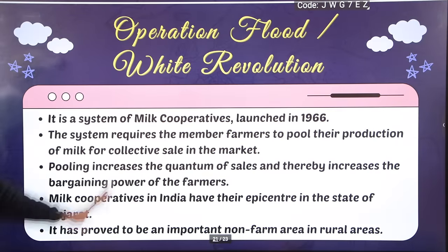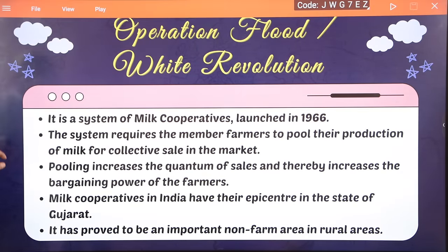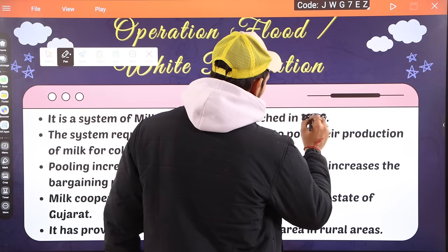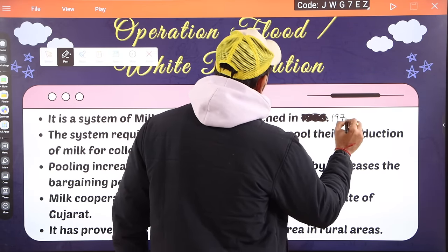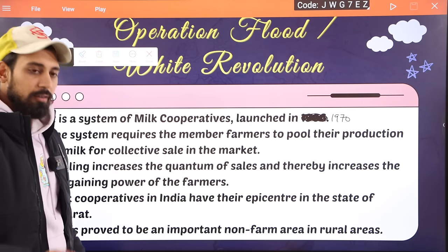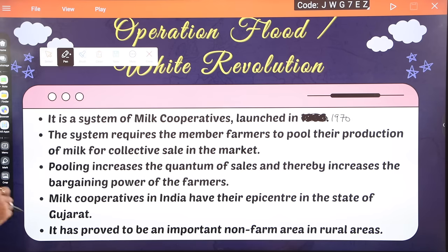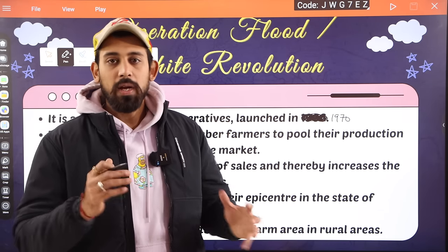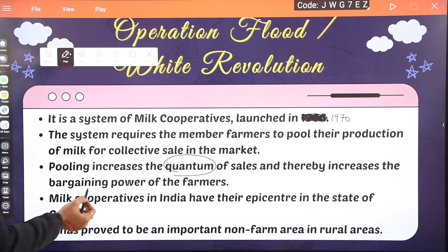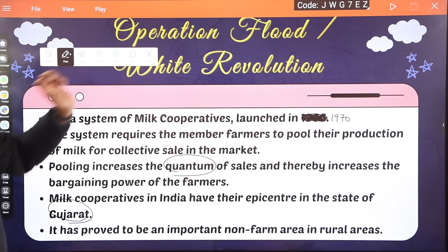Operation Flood is a system of milk cooperatives launched in 1970, started by Verghese Kurien. The system requires members to pool their milk production collectively to get better prices. Pooling increases the quantity of sales. Milk cooperatives are epicentered in Gujarat and represent an important non-farm area in rural development. This is also known as the White Revolution.